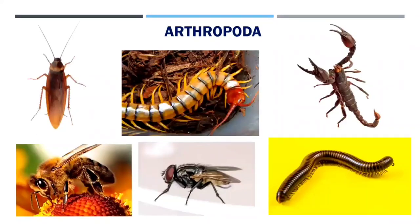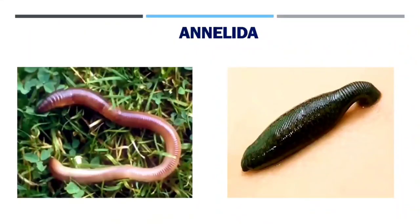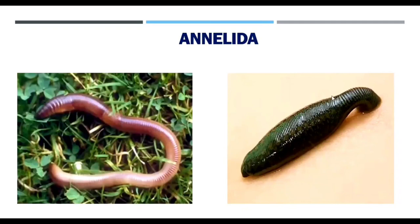These animals — Annelida — are also bilaterally symmetrical and triploblastic, but in addition they have a true body cavity, so they are coelomate. There is extensive organ differentiation occurring in segmental fashion, with segments lined up one after another from head to tail. These animals are found in a variety of habitats: freshwater, marine, and land. Earthworms and leeches are familiar examples, both having a true coelom in their body.